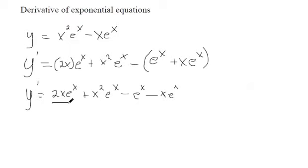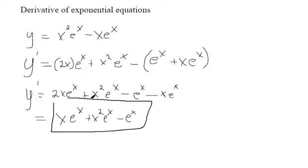Let's see what's alike. You've got 2x e to the x minus x e to the x, so now you've got 1x e to the x. Up here we still have x squared e to the x, and then we have minus e to the x to finish it out. That's what it looks like once we've simplified.